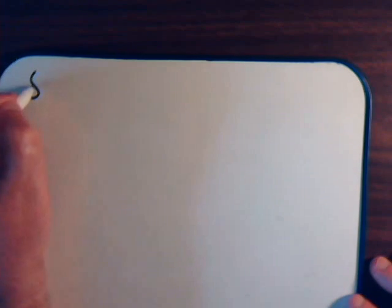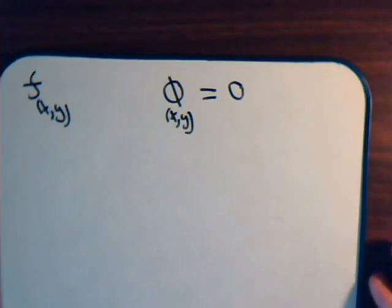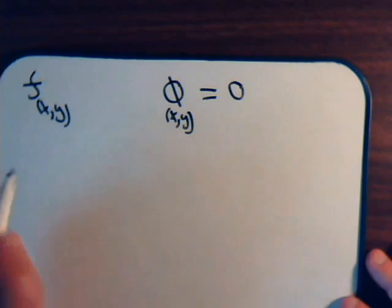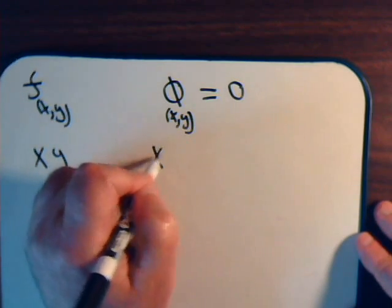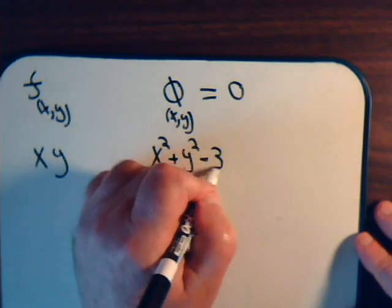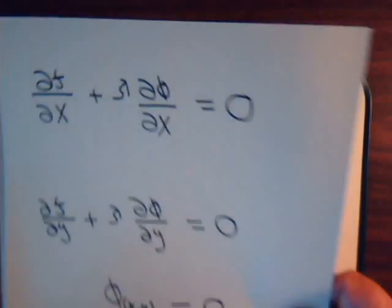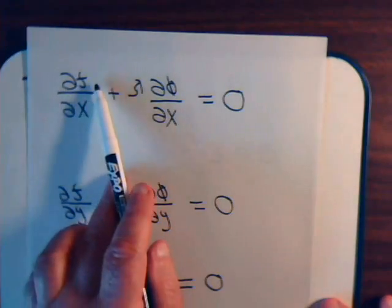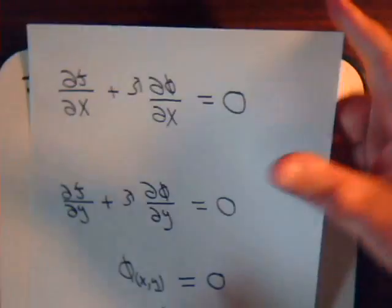Now, in general all of our problems have the same setup: we have some function f(x, y) to optimize and a constraint equation involving x and y set equal to 0. For our rectangle problem, f(x, y) = x·y, and our constraint equation is x² + y² − 3 = 0. This is an easy one to solve, but let's solve it with Lagrange multipliers. We'll need three equations, so we take the partial of f with respect to x, the partial of ψ with respect to x, and then the partials of each with respect to y.